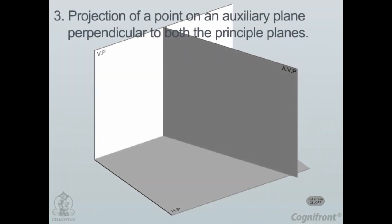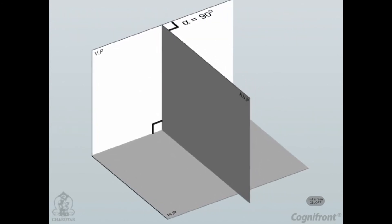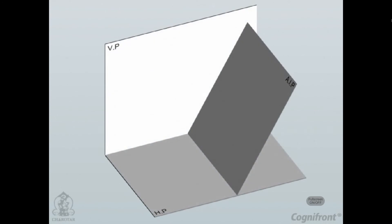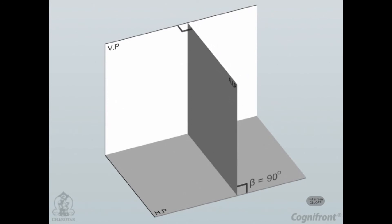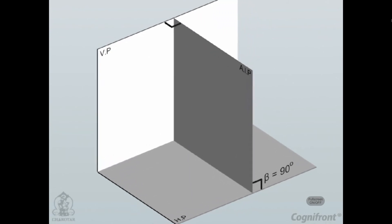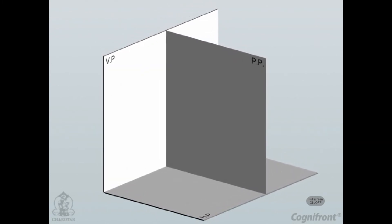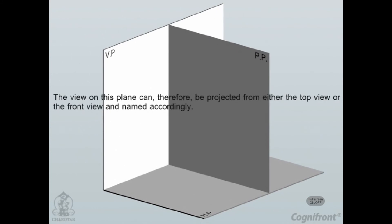If the inclination of the AVP with the VP is increased so that alpha equals 90 degrees, the AVP will be perpendicular to both planes. Similarly, if the inclination of the AIP with the HP is increased so that beta equals 90 degrees, it will also be perpendicular to both the HP and the VP. This plane is also called the profile plane, PP.